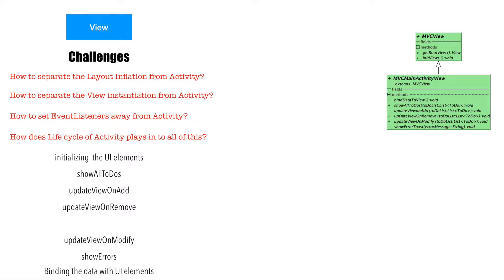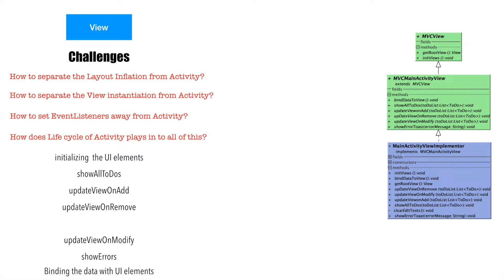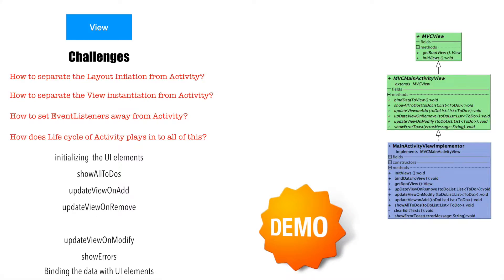Finally, we will implement the main activity interface through another class called MainActivityViewImplementer, and as you can see it implements MVCMainActivityView. So it will have to inherit the methods from both MVCView and MVCMainActivityView. This is the very basic premise we can get started with. What we will actually do in these methods we will look at in the demo. So let's go to the source code.